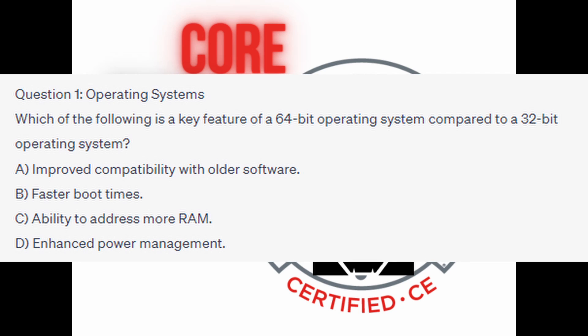Which of the following is a key feature of a 64-bit operating system compared to a 32-bit operating system? Is it A: improved compatibility with older software? Is it B: faster boot times? Is it C: ability to address more RAM? Or is it D: enhanced power management?